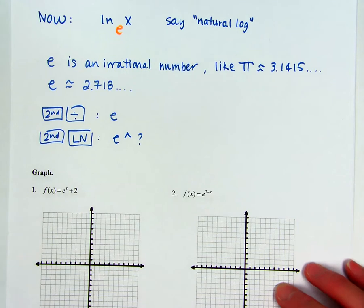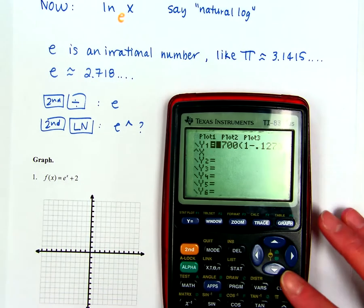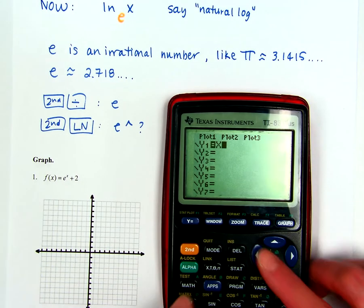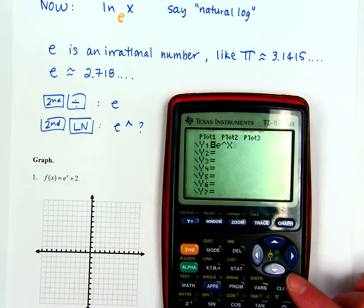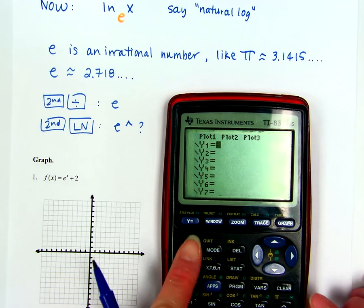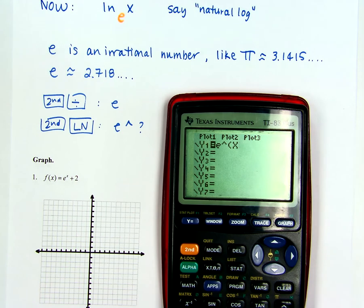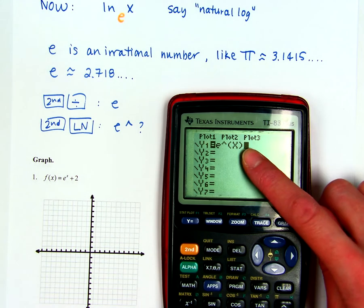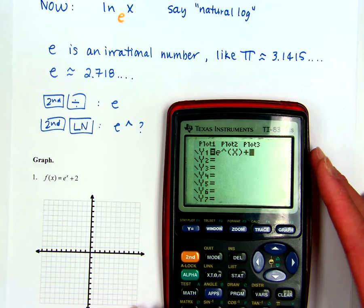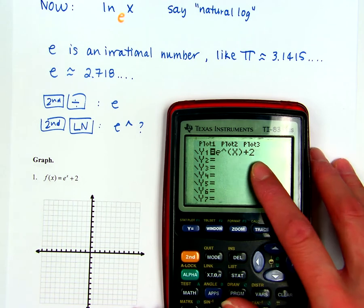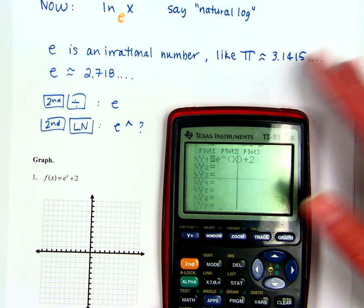First, we're going to graph. In number one, go to Y equals and type E to the X. You can do Second Divide, or you can also do Second Natural Log and do E to the X that way. If you do it that way, make sure you close the parentheses, because the only thing that should be up in the exponent is the X, not the plus 2. Type it in and hit Graph.